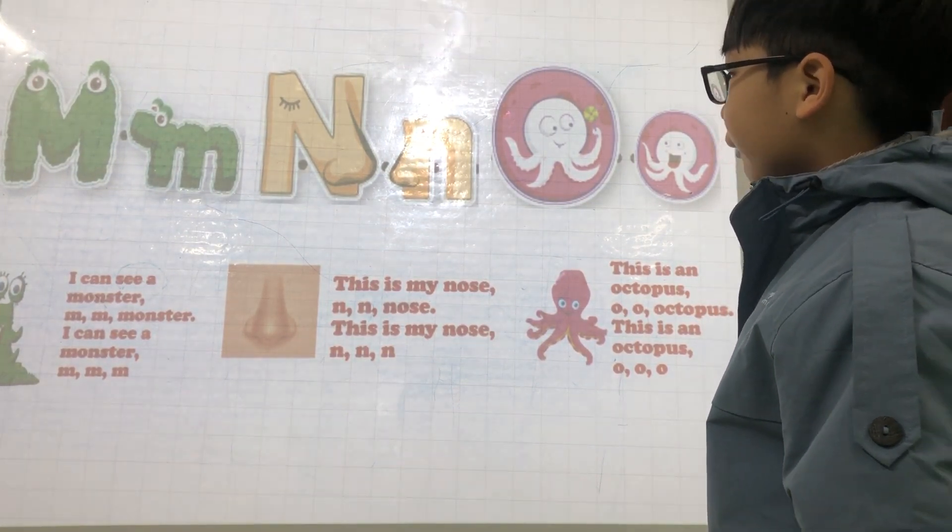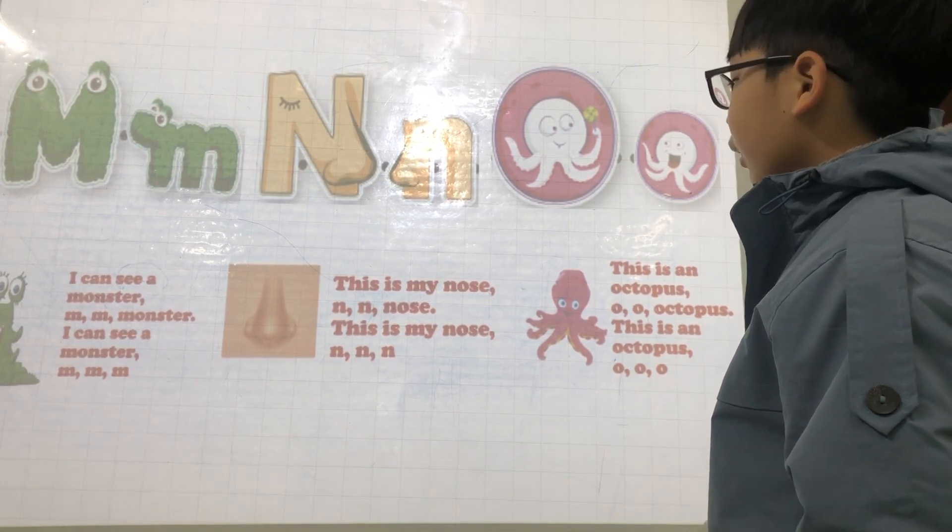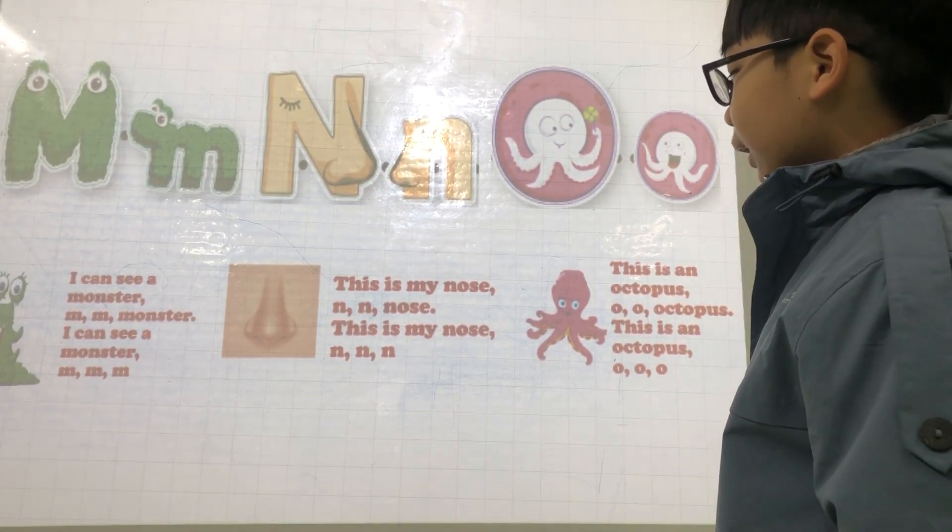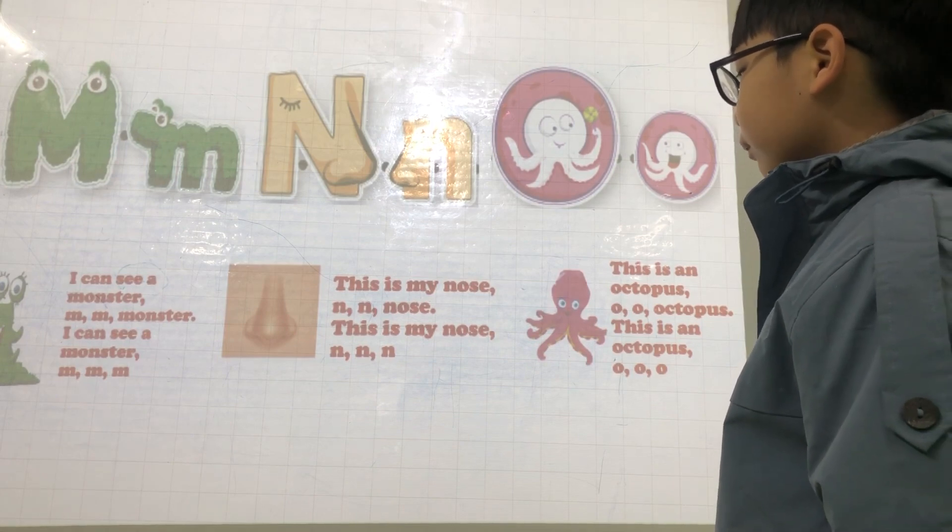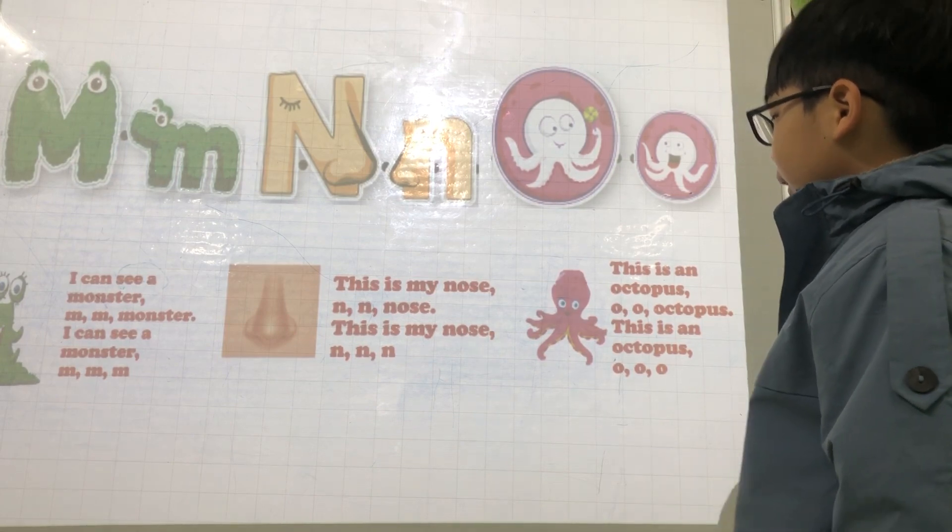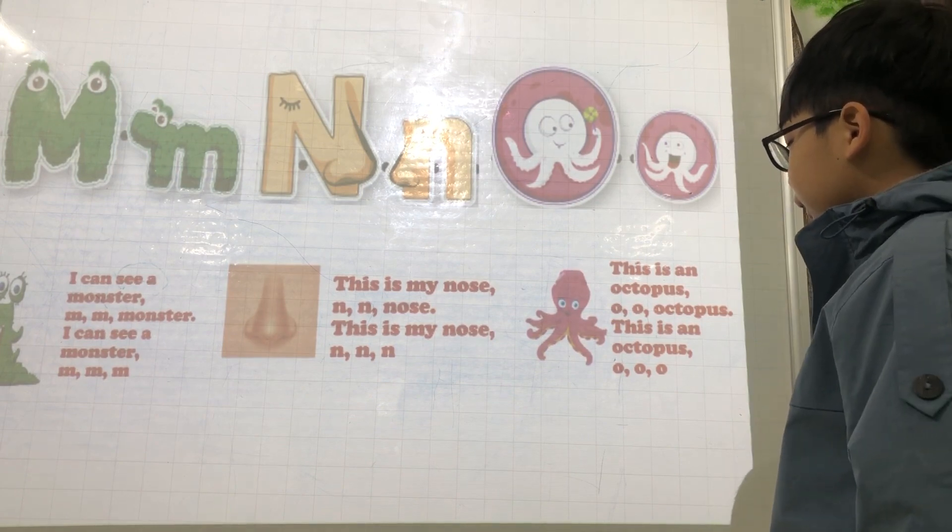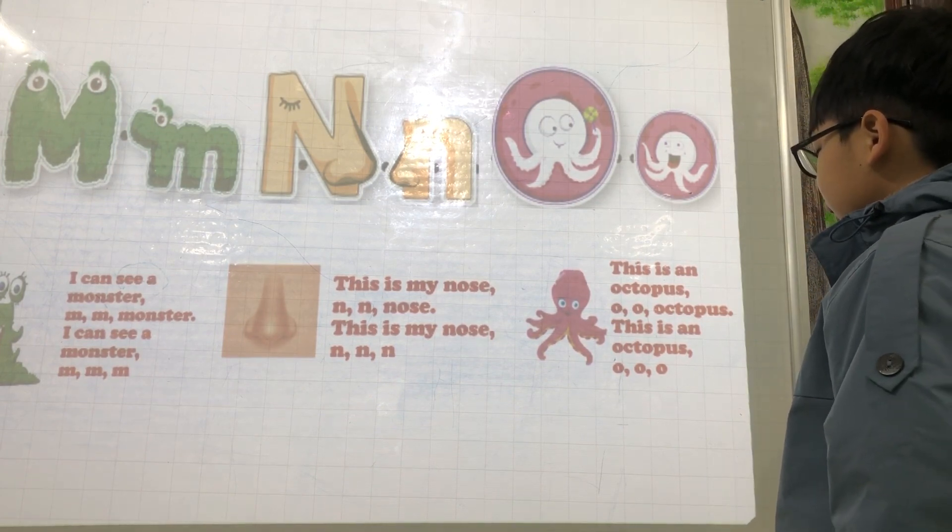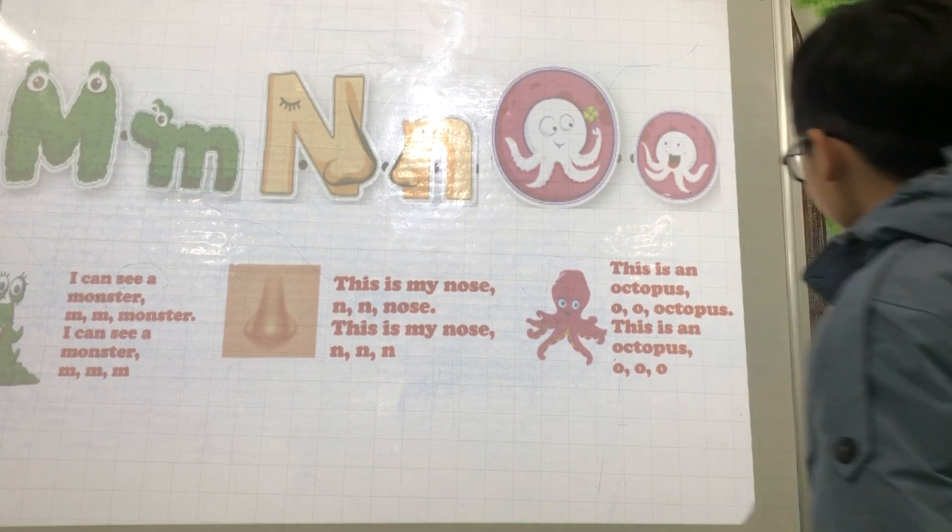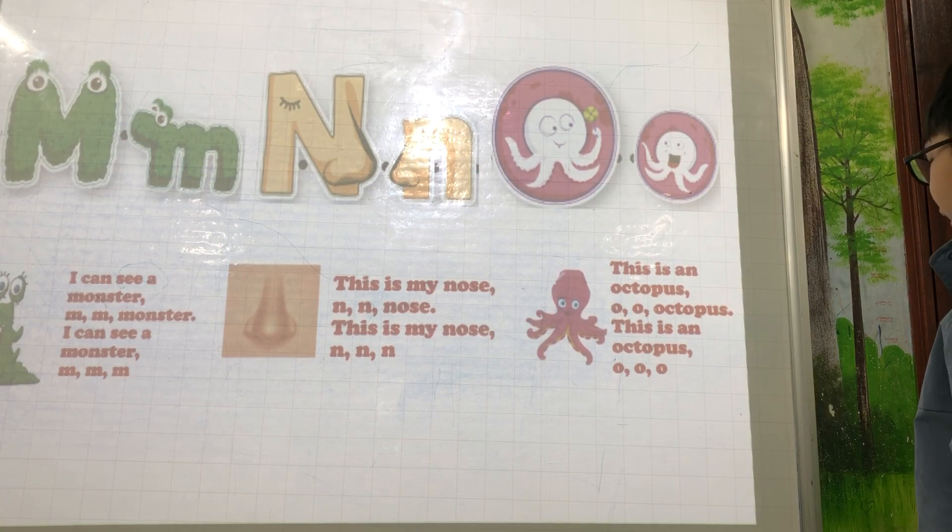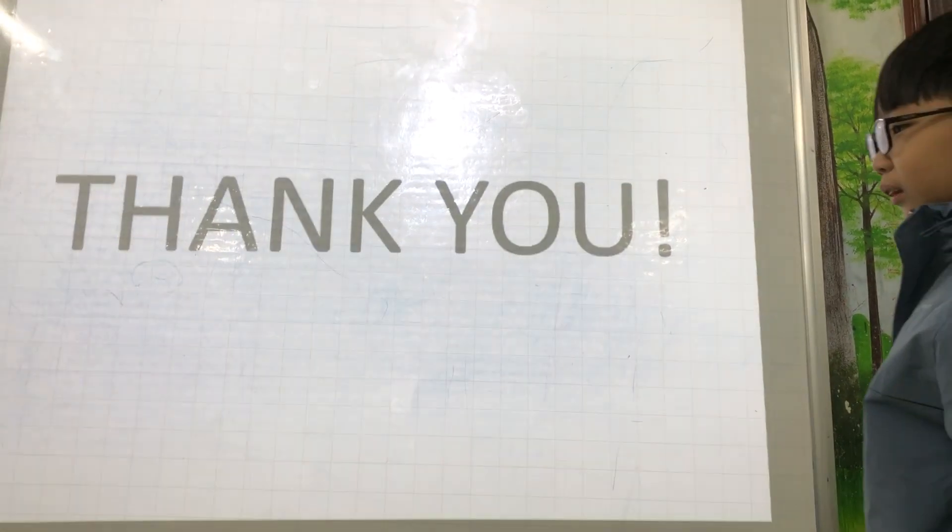M, N, O. I can see a monster. Monster. I can see a monster. This is my nose. Nose. This is an octopus. Octopus. This is an octopus. Okay. Thank you, Sam.